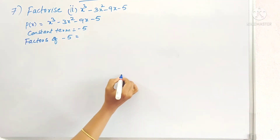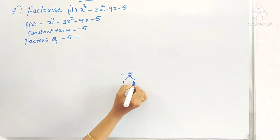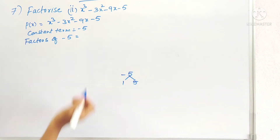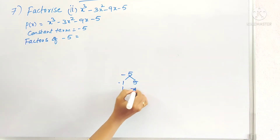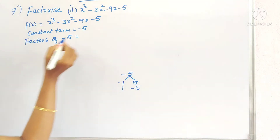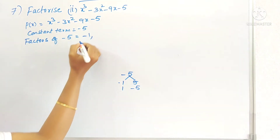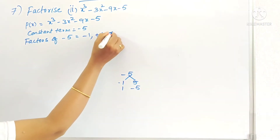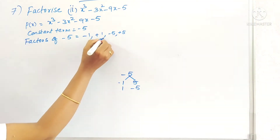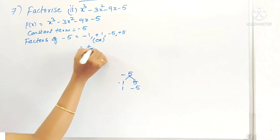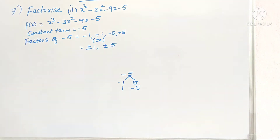How will we get minus 5? 1 into 5 is 5, but here we have to get minus 5. So minus 1 into 5, or otherwise 1 into minus 5. Factors of minus 5: I can write minus 1, plus 1, minus 5, plus 5 — or plus or minus 1, plus or minus 5.